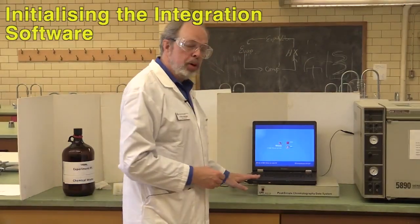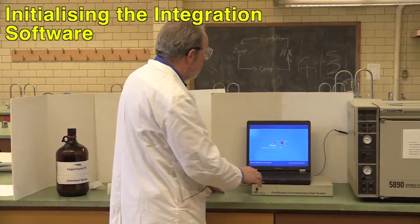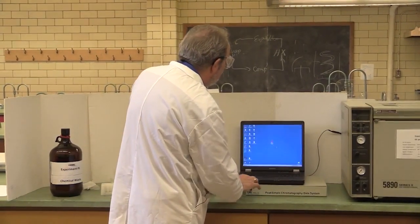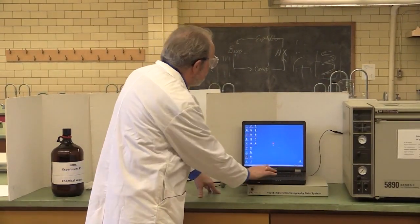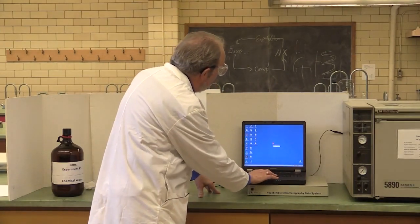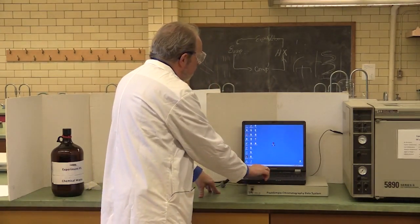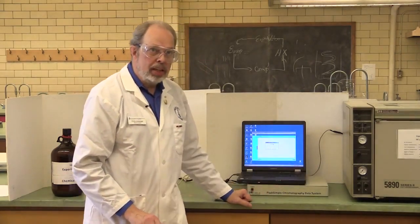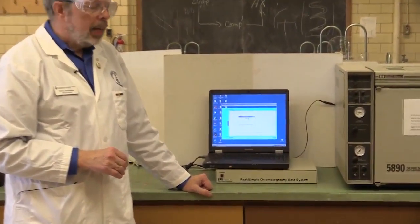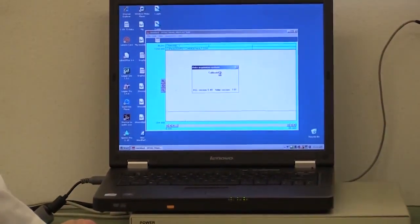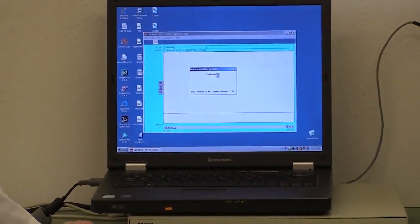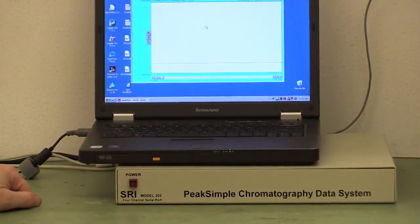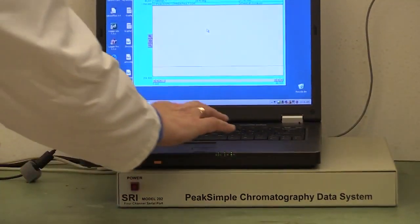Over here on the laptop, your TA will give you the laptop. Invoke this as user. And you want to invoke the program peak simple 2.83. So we'll do that. While that is firing up, this beige box underneath is actually the integrator. It takes the analog signal from the gas chromatograph, converts it into something digital so that the computer can handle it, the information.